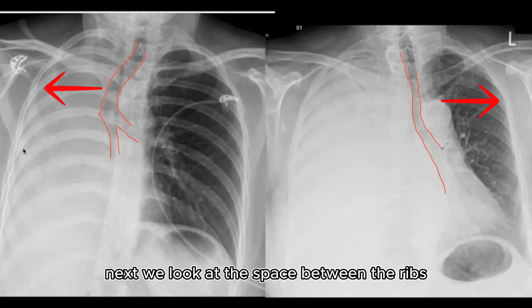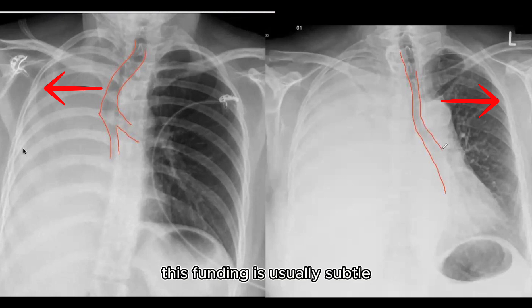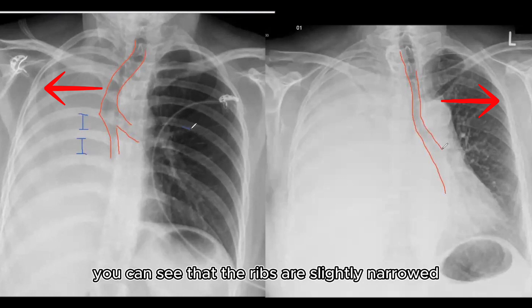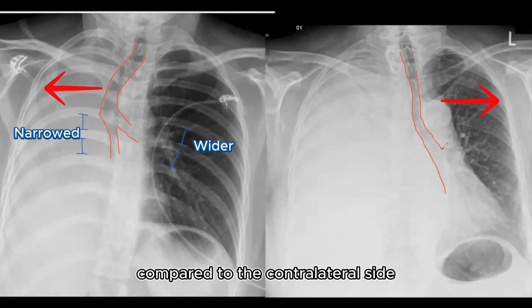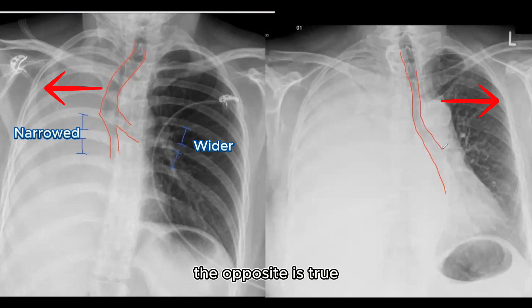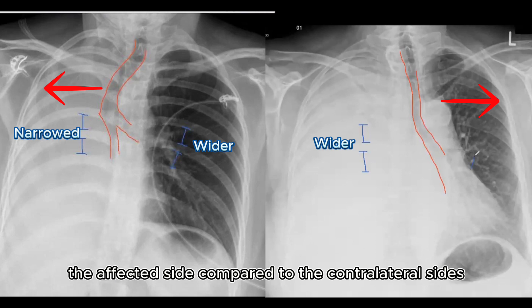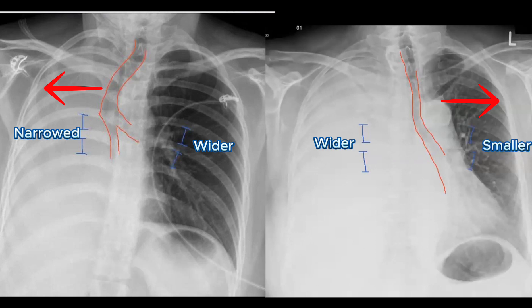Next we look at the space between the ribs. This finding is usually subtle. If you look carefully on the image to your left, you can see that the ribs are slightly narrowed on the affected site compared to the contralateral site. On the image to the right, the opposite is true — there is a slightly increased space between the ribs on the affected site compared to the contralateral site.